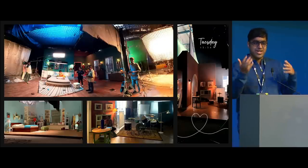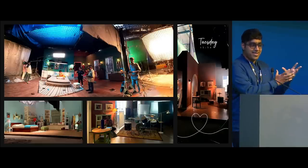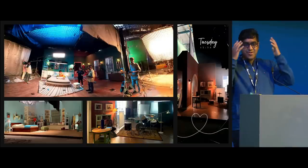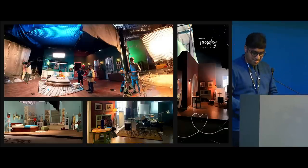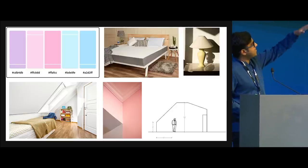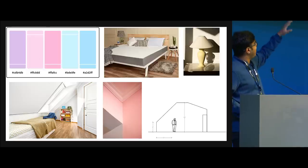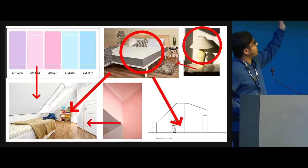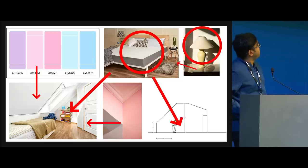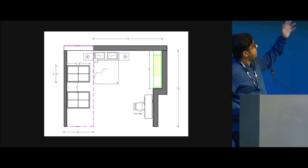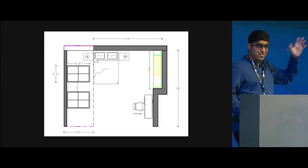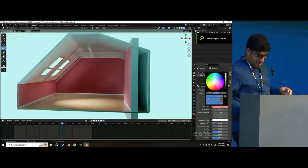We decided: why don't we visualize it in 3D and show it to the clients so they don't have to go through the mental process of wondering about the color and the lighting? Before this we'd have a color palette, prop references — it looked like a clickbait YouTube thumbnail. So our simple solution: we get these drawings from our set designers, take them into Blender, extrude and do all that beautiful stuff.